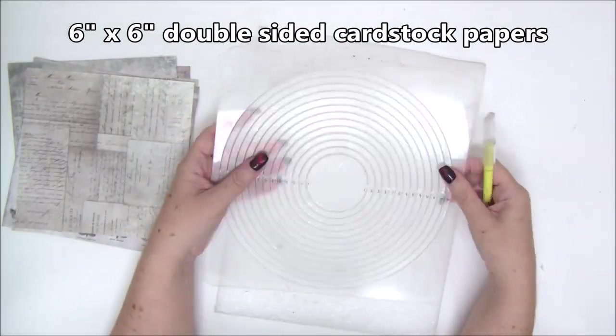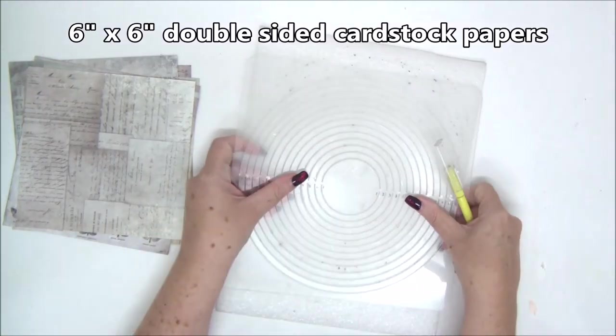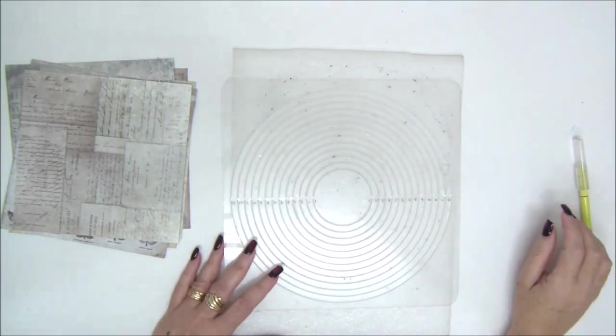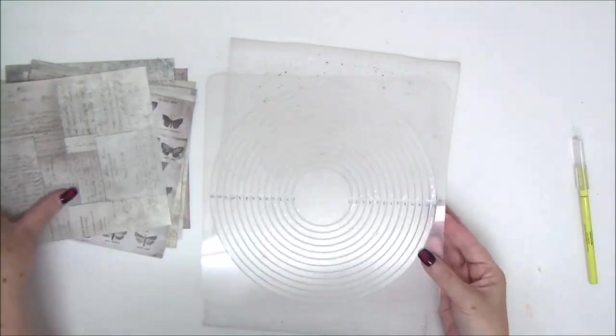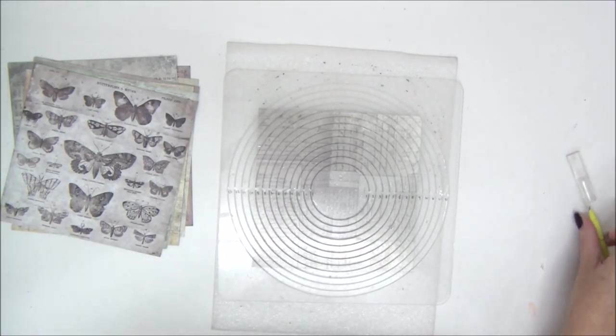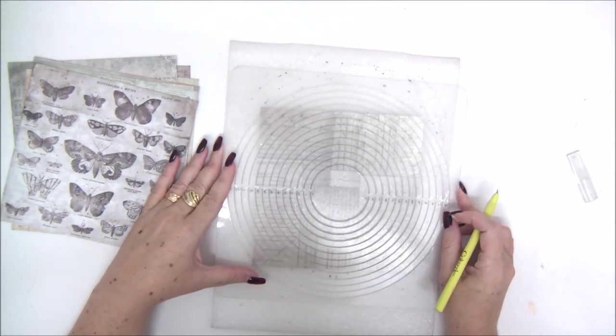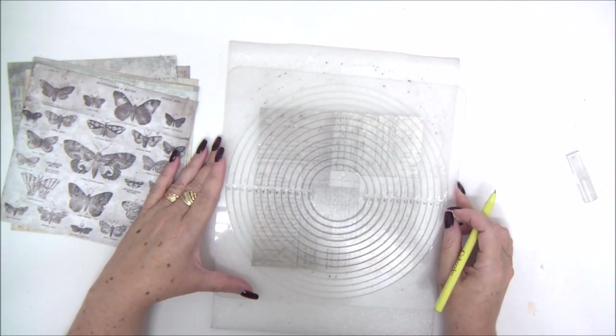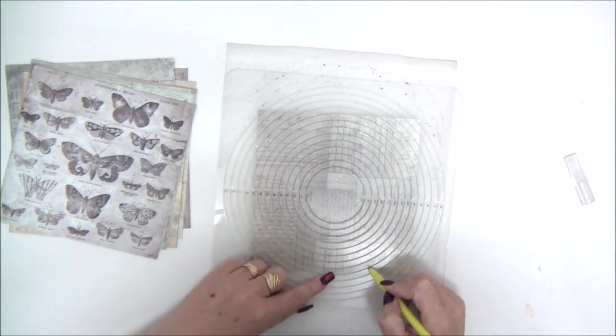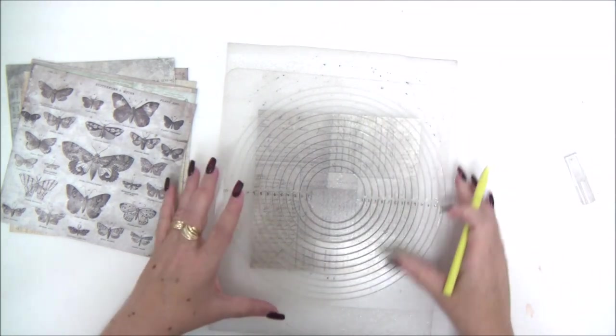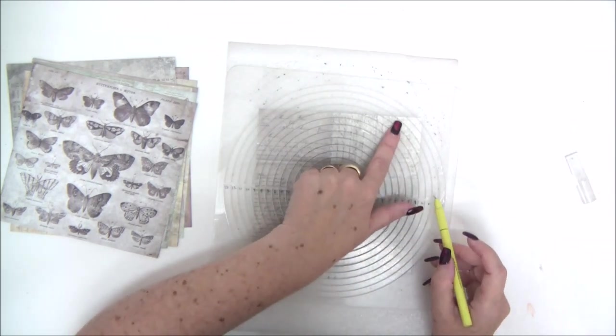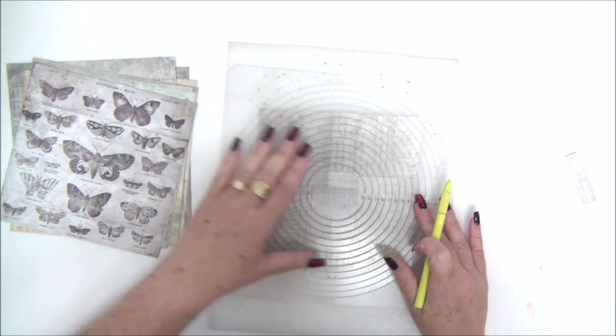What you need is a few papers measuring six by six inches and a circle cutting system. The system I'm using doesn't exist anymore, but you can find many other circle cutting systems in craft stores nowadays. If you don't have one, you can always use calipers and then draw your own circles.